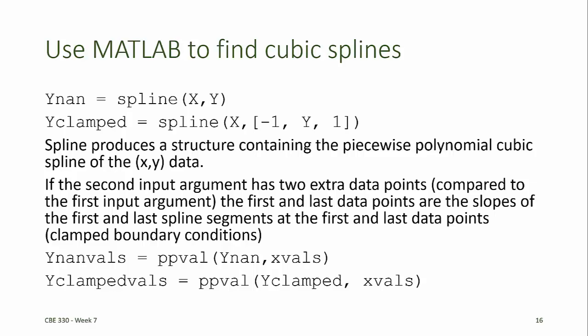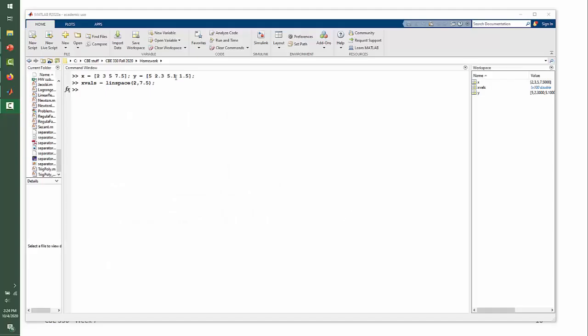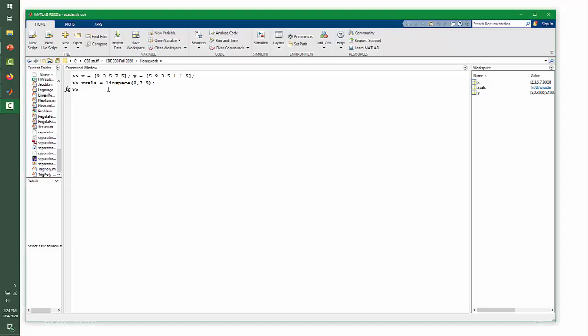We'll illustrate this with an example in MATLAB. Here we've created variables representing the vectors of x and y data from the example in section 5.6.7 on page 207 of the methods text. We've also created a vector of x values containing 100 values that span the domain of the x variables from 2 to 7.5.